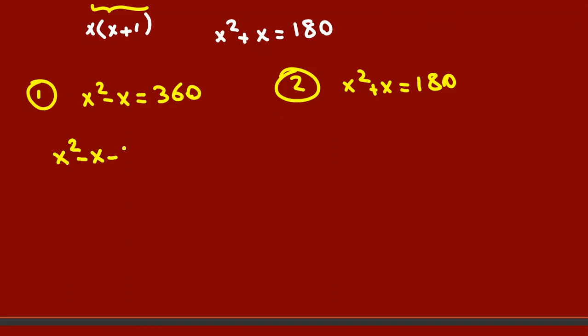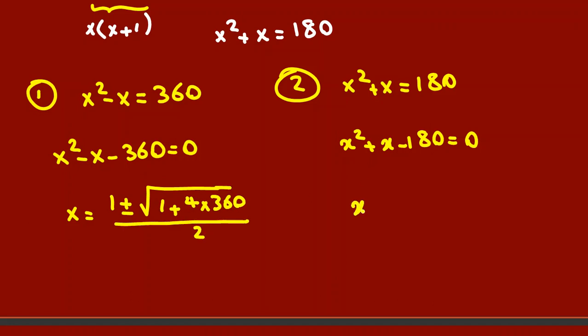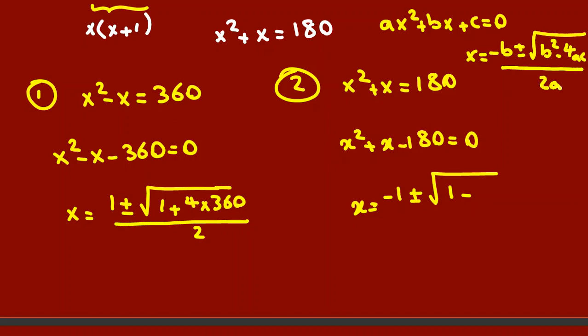If you want to make sure, you can say x² minus x minus 360 equals 0, and x² plus x minus 180 equals 0. If we solve using the quadratic formula, it will be: negative b plus or minus square root of (b² minus 4ac) over 2a. For the quadratic formula, if ax² plus bx plus c equals 0, then x equals negative b plus or minus square root of (b² minus 4ac) all over 2a. I'm using this formula; it's very useful.